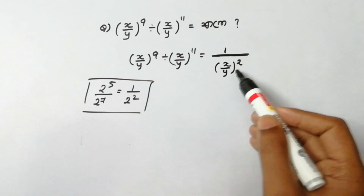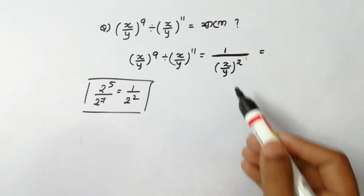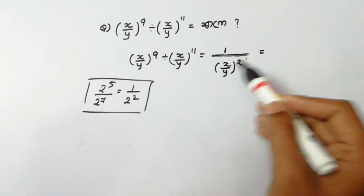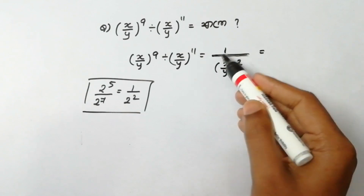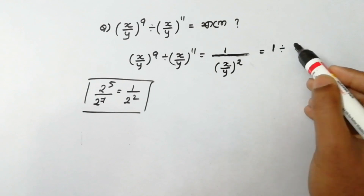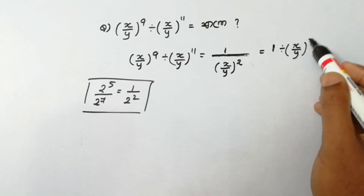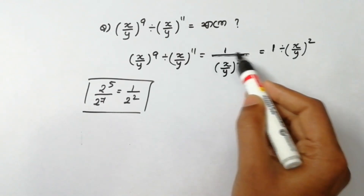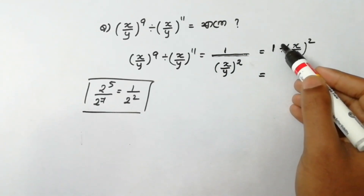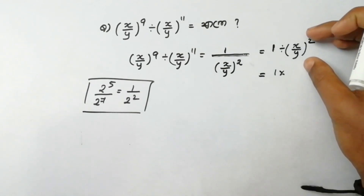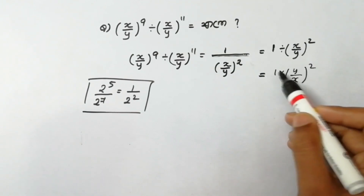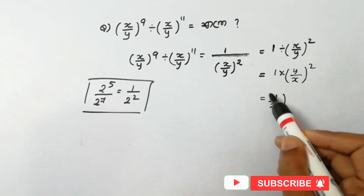This is the answer. This is the option. The rule gives us 1 divided by (x/y) the whole squared, or equivalently 1 by (y/x) the whole squared.